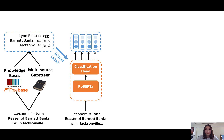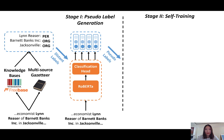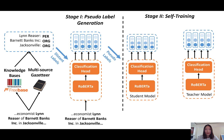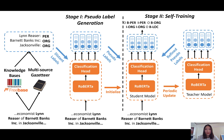To address the above challenges, BOND leverages the power of pre-trained language models and improves the quality of predictions induced from distance supervision. To fully harness the power of pseudo labels, we propose a two-stage framework. In the second stage, we design a teacher-and-student framework, which progressively refines the pseudo labels and improves the model confidence over data.